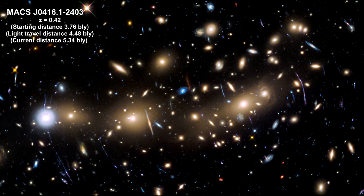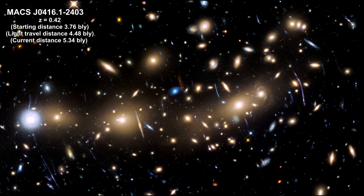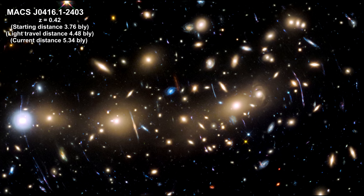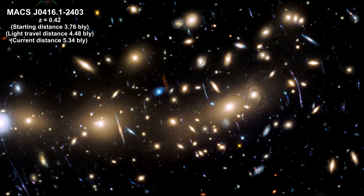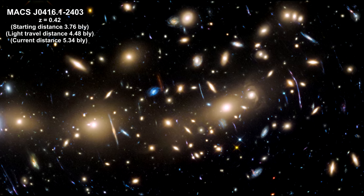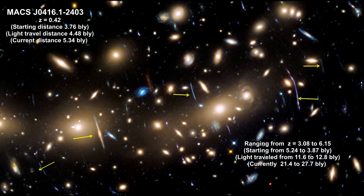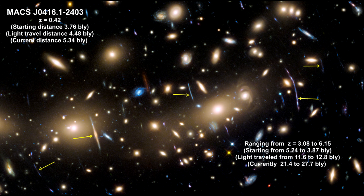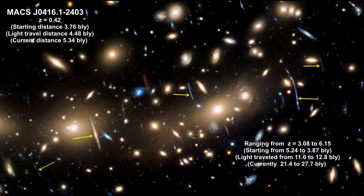Here's another one. The light from this galaxy traveled 4.48 billion light-years to get here. These foreground galaxy clusters are magnifying the light from the faint galaxies that lie far behind it. The faint light from these lensed galaxies traveled up to 12.8 billion light-years. It's the gravitational lensing that allows us to see that far back in time. Without the magnification, these galaxies would be invisible for us.